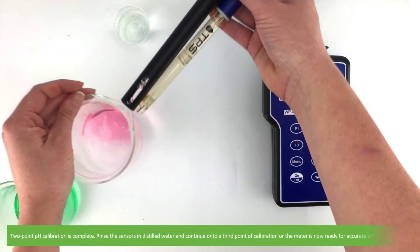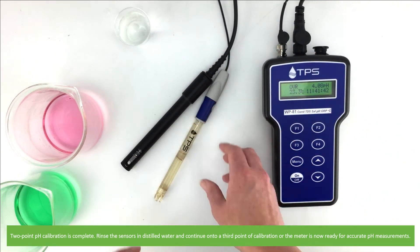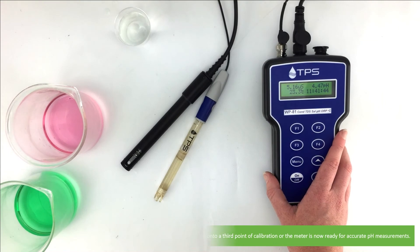Two-point calibration is complete. You can rinse the sensors with distilled water and continue on to a third point of calibration, or the meter is now ready to take accurate pH measurements.